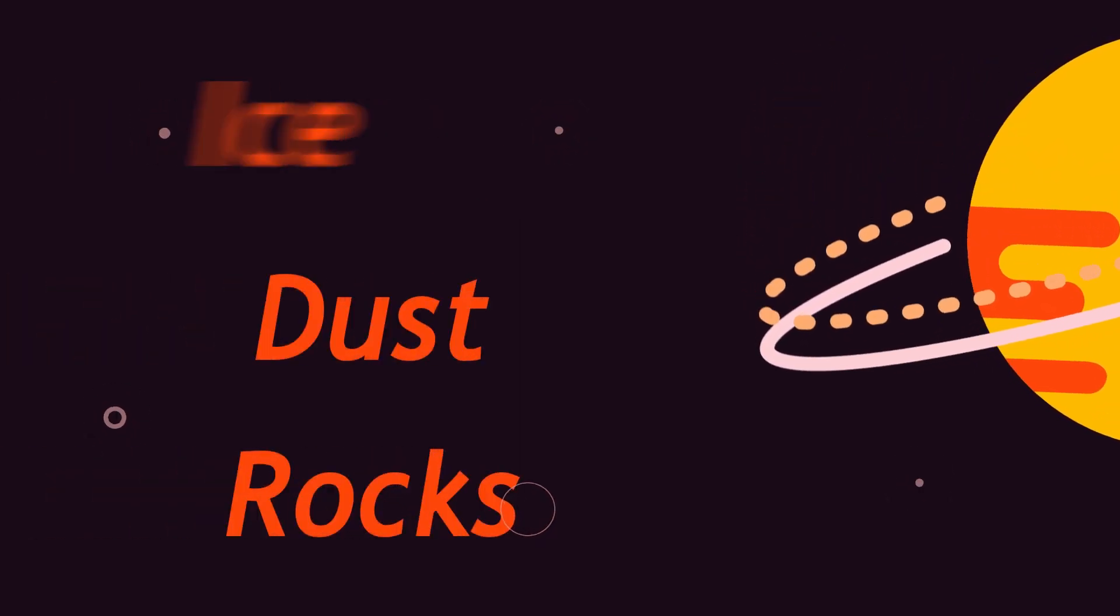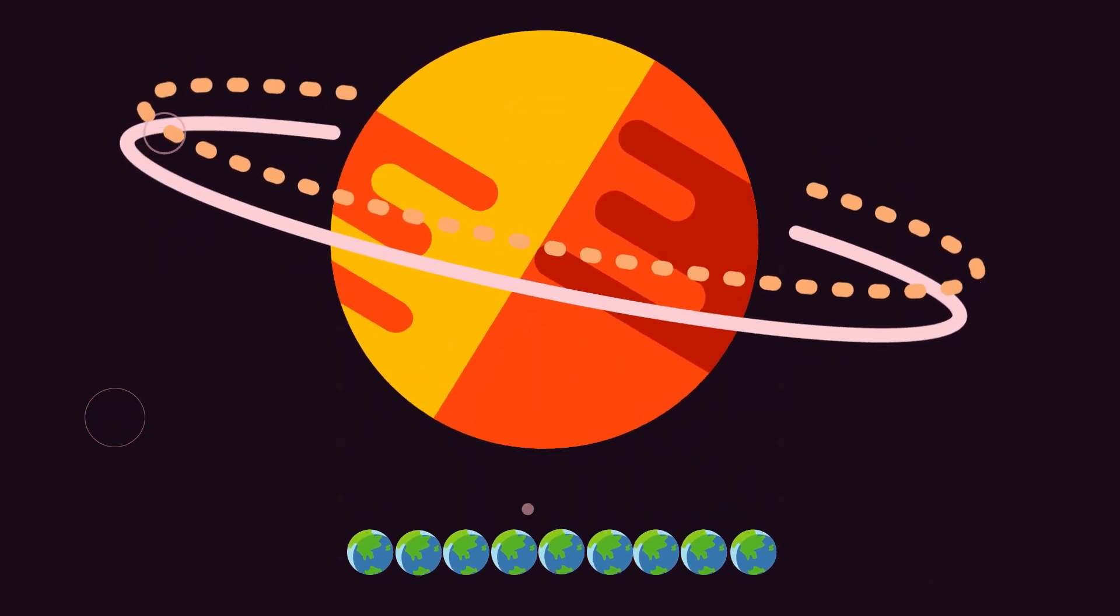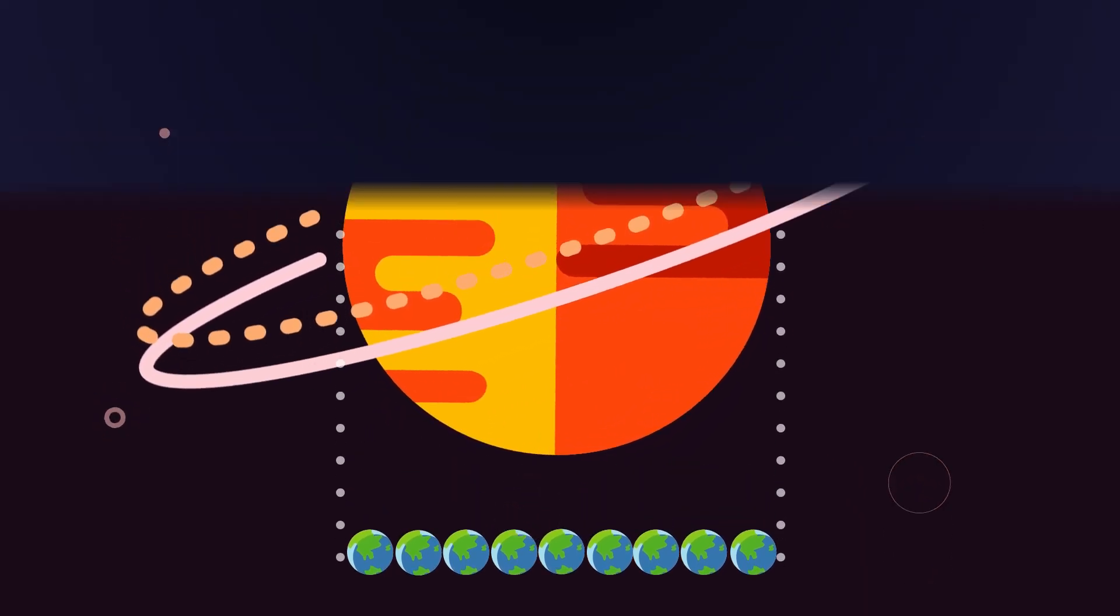The rings are made of billions of pieces of ice, dust, and rocks. Nine Earths side-by-side would almost span Saturn's diameter. That doesn't include Saturn's rings.